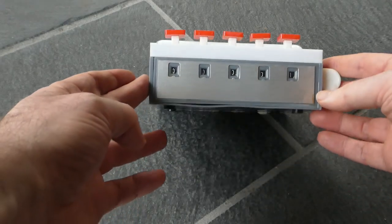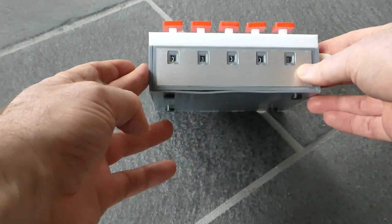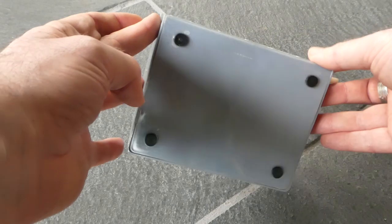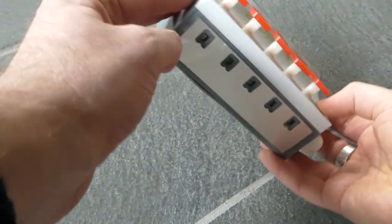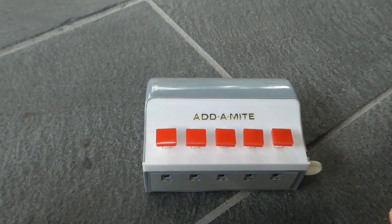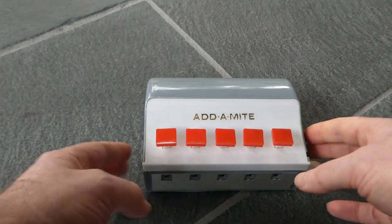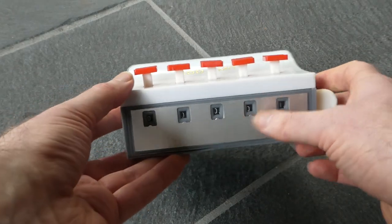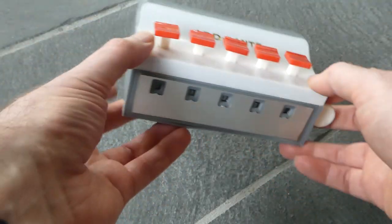On the front it has a five digit register. As you can hear, something's loose and rattling in there. Unfortunately it doesn't quite work because some tooth or something has broken off, which is what's rattling.